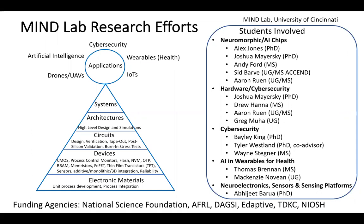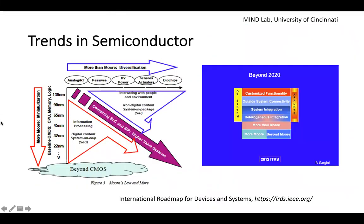Moving on to trends in semiconductor technology. This is a famous slide from the International Roadmap for Devices and Systems (IRDS). One of the key terminologies is 'More Moore' — how can you continue scaling CMOS devices? This chart shows the roadmap through 22 nm, but 14, 7, 5, 3 nm are all in the pipeline. Under More Moore, emerging devices such as RRAM and memristors also come into the picture. There is also 'More than More' — how can you integrate more functionality into the same chip?